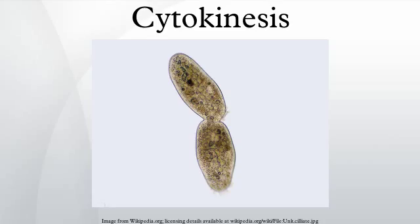The construction of the new cell wall begins within the lumen of the narrow tubules of the young cell plate. The order in which different cell wall components are deposited has been determined largely by immuno-electron microscopy. The first components to arrive are pectins, hemicelluloses, and arabinogalactan proteins carried by the secretory vesicles that fuse to form the cell plate. The next component to be added is callose, which is polymerized directly at the cell plate by callose synthase. As the cell plate continues to mature and fuses with the parental plasma membrane, the callose is slowly replaced with cellulose, the primary component of a mature cell wall.